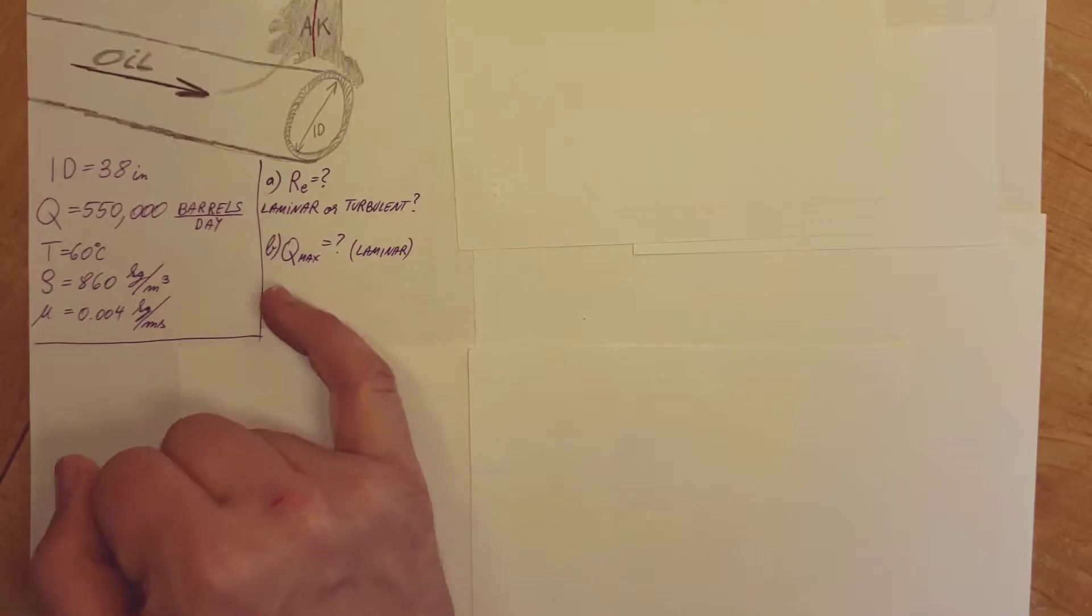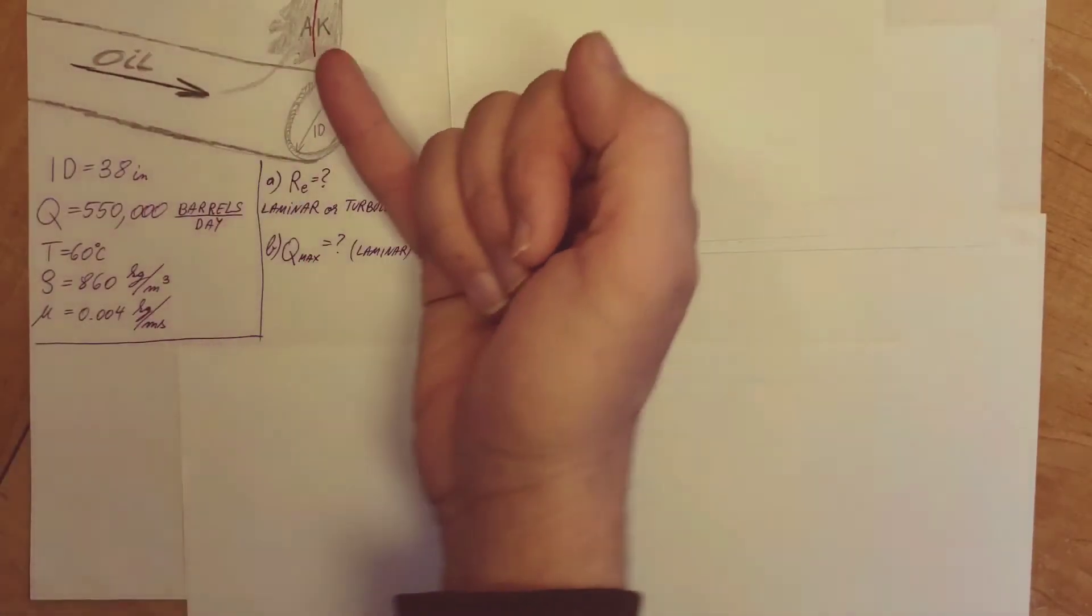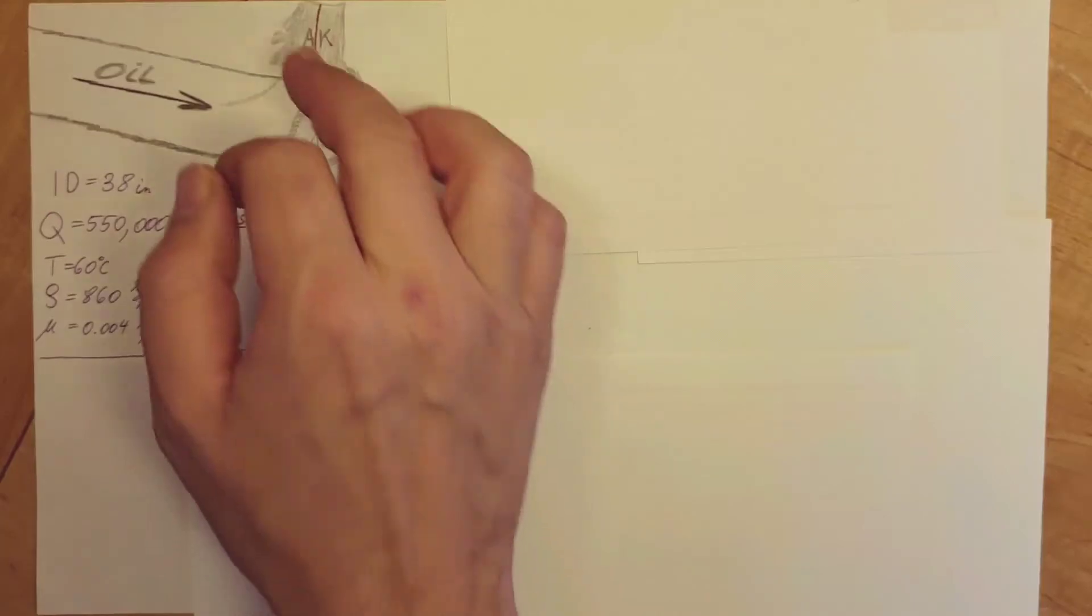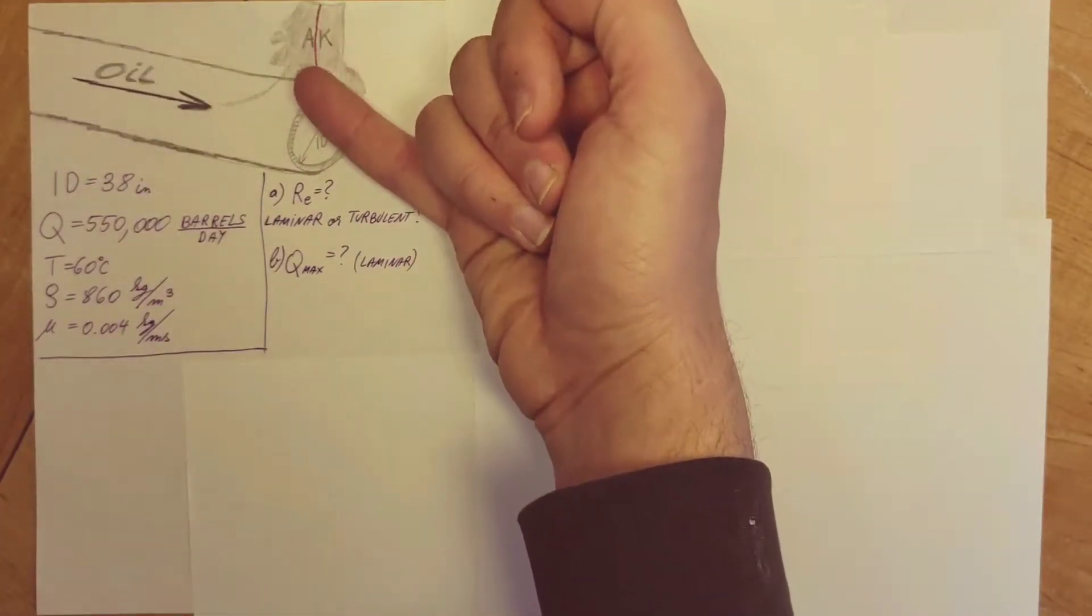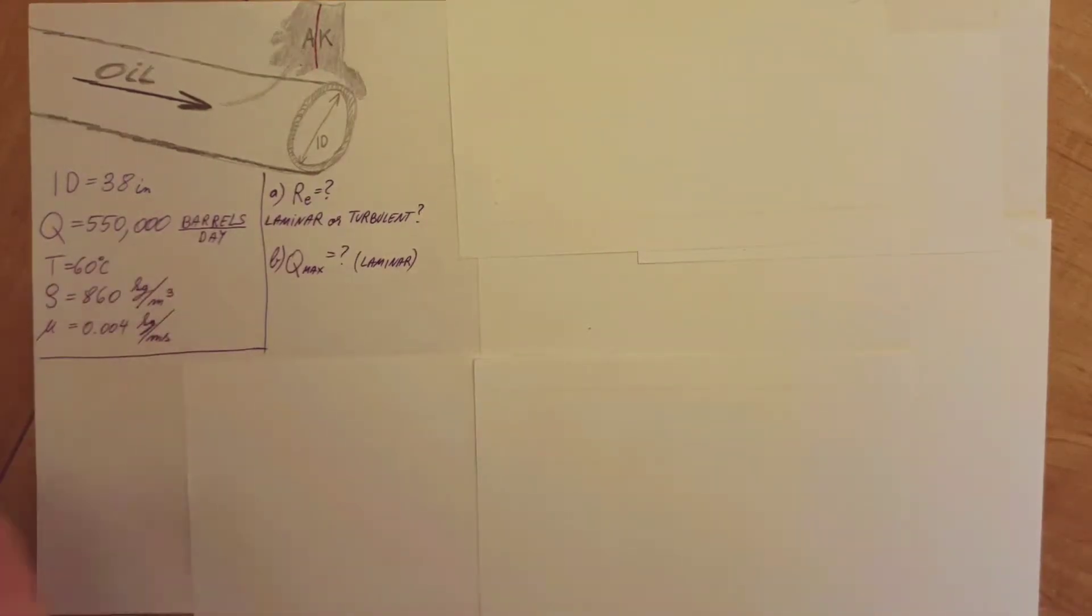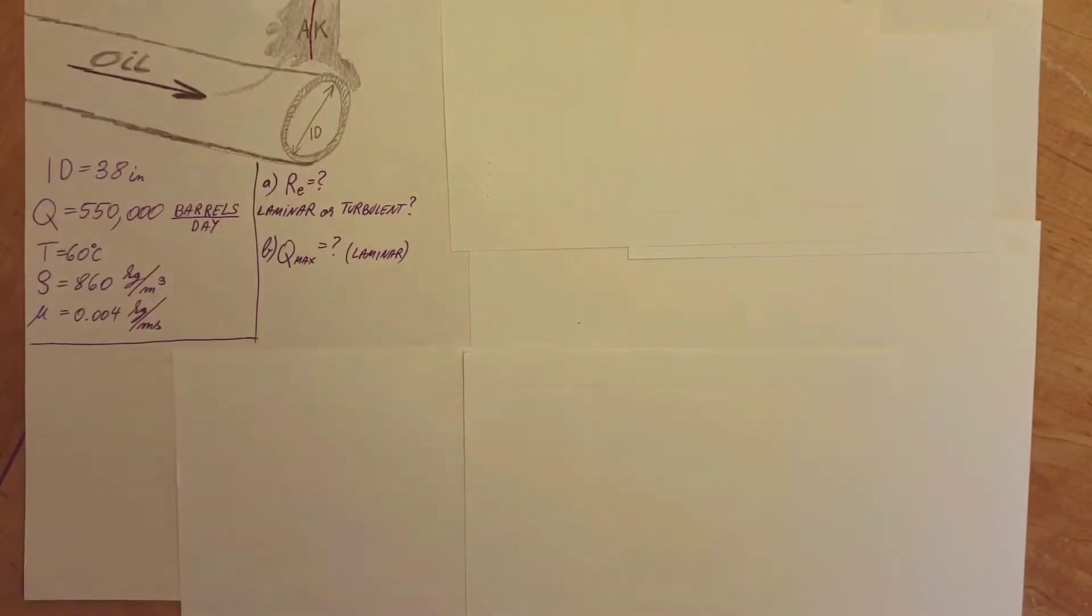In the second part, they want us to find out what it takes to keep the flow laminar, what kind of flow rate we should have. In case you don't know what kind of pipeline we're talking about here, this is a rough sketch of a pipe. And this is my attempt of drawing Alaska's map, and it goes from the north part all the way to the south part. This is a very big pipeline, not something small, so we're dealing with a huge object.